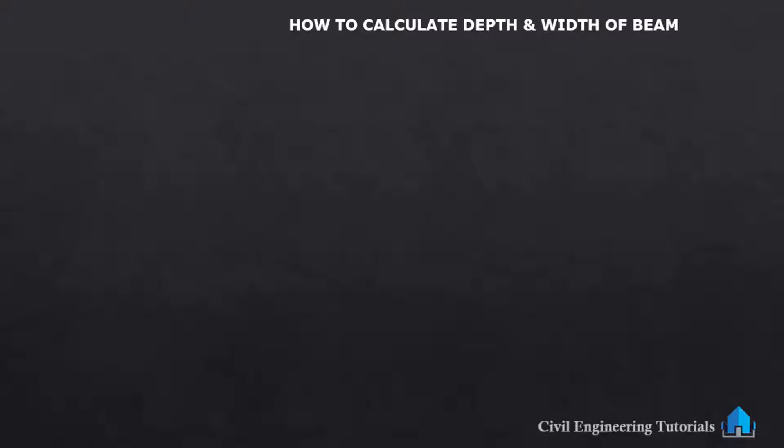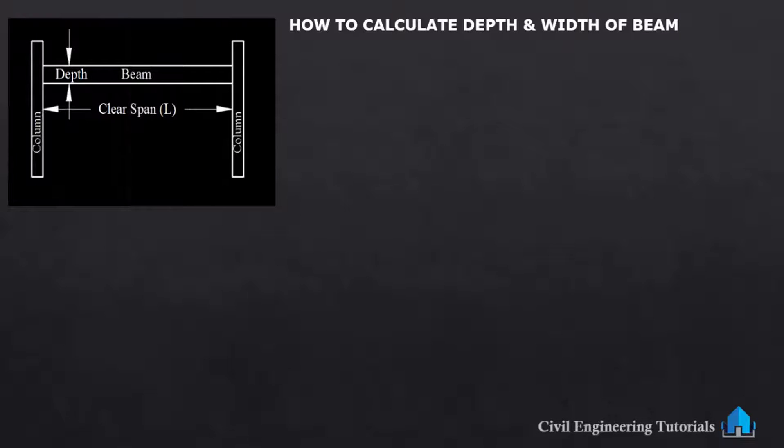First of all, what is beam? Beam is a horizontal structure which is used to resist horizontal, vertical and shear load. That means beam is used to support the weight of floors, ceilings and roofs of a building and to transfer the load to a vertical load bearing element of the structure.